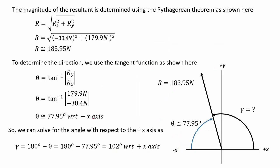To obtain the magnitude of the resultant vector, we apply the Pythagorean theorem and we see that it is about 183.95 newtons. For the direction, we use the tangent function.